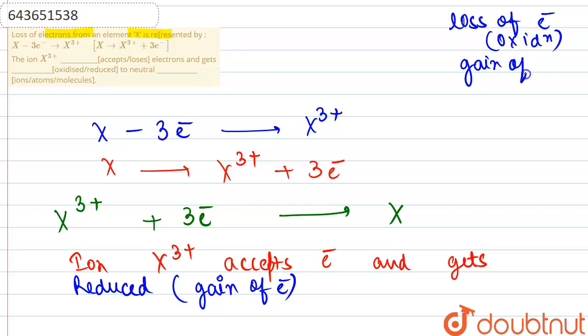However, gain of electrons is termed as reduction. So on gaining the electron, the species gets reduced, and it is getting reduced to a neutral atom.